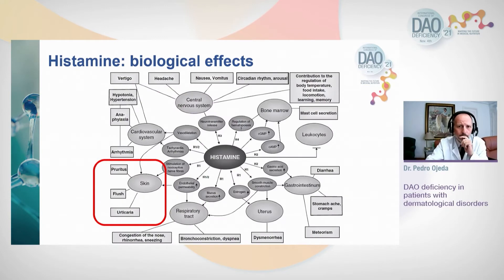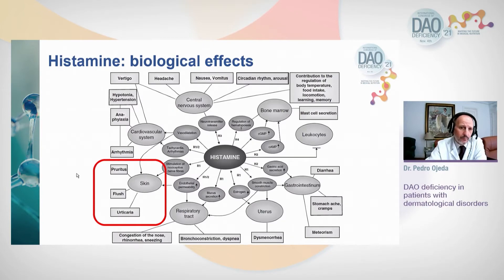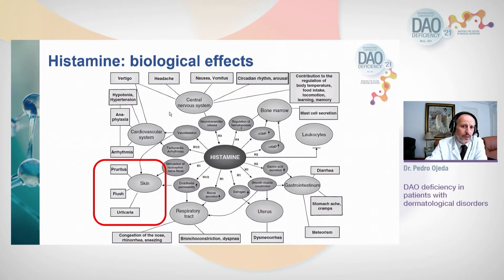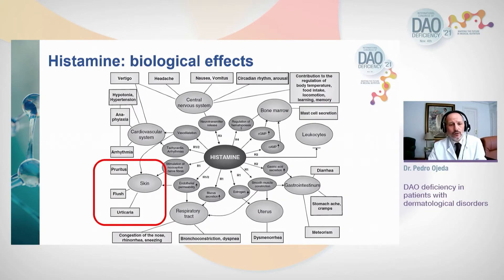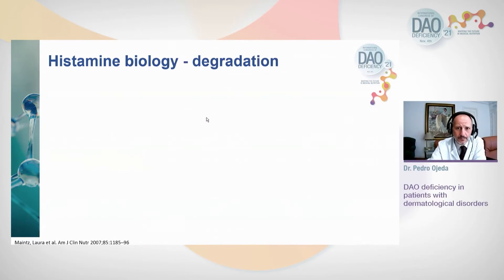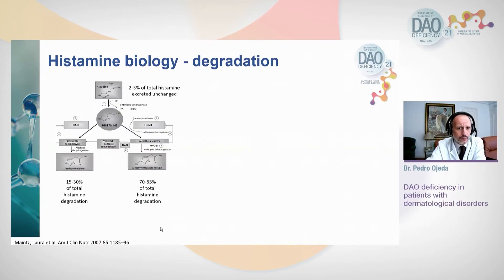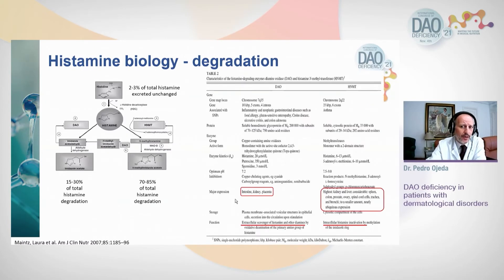The most recently described H4 receptors are present in bone marrow and immune system cells, where they act as important immunoregulators. Histamine essentially has effects on all organs and systems of the body. We see urticaria and flushing, but it produces effects in other tissues and systems, leading to a myriad of symptoms. Among these, allergologists frequently see anaphylaxis-like symptoms — not true anaphylaxis, but an excess of histamine can lead to anaphylaxis-like symptom disorders.